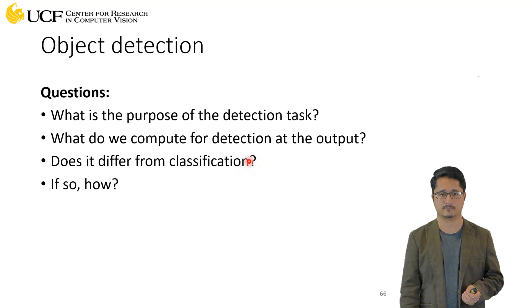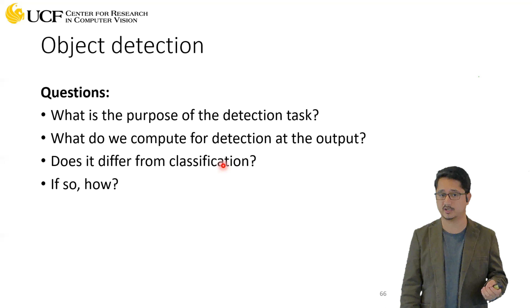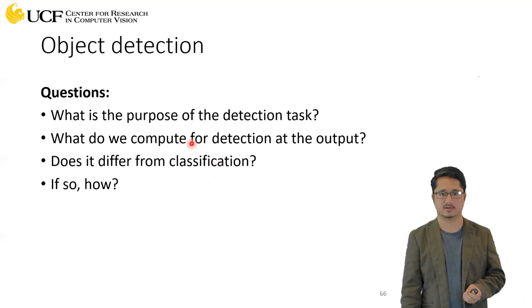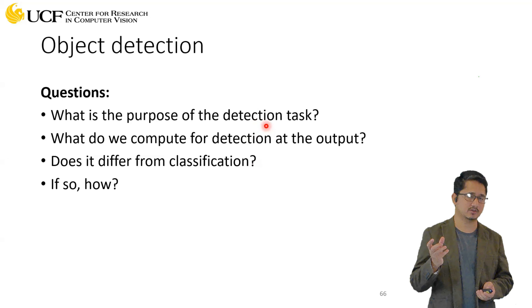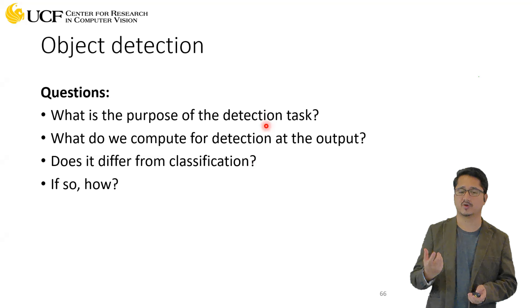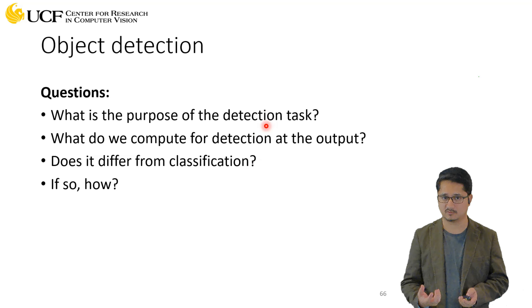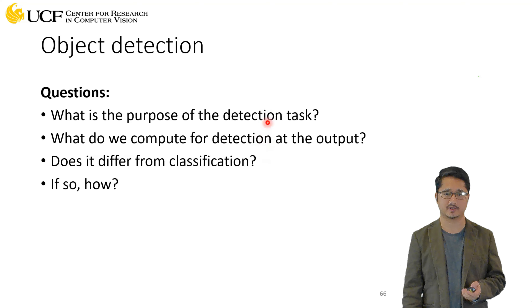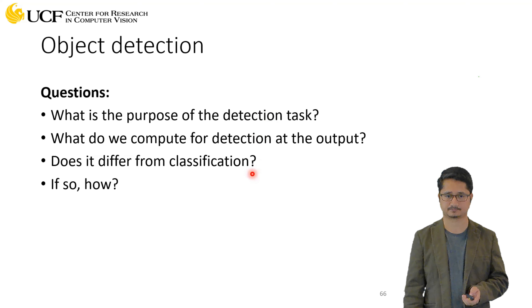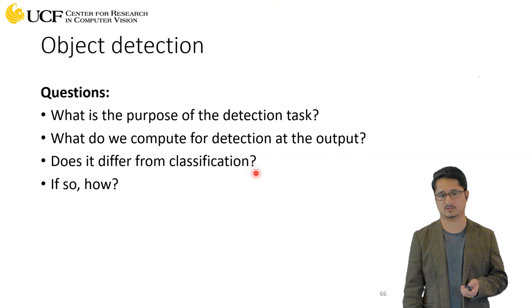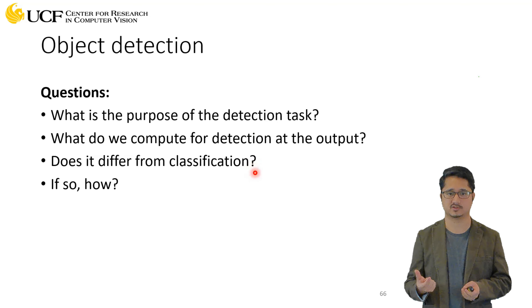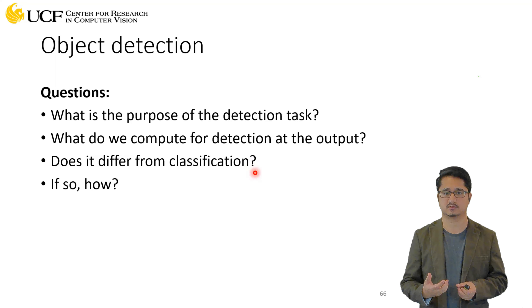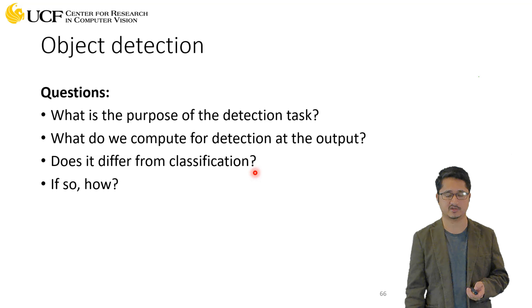The goal of object detection is not just to say that an object is present, but to localize exactly where it is. It's not as precise as segmentation, which gives pixel-wise boundaries, but it provides a rough estimation in the form of a bounding box indicating where the object is located. This is how detection is differentiated from classification, where we don't care about where the object is present.